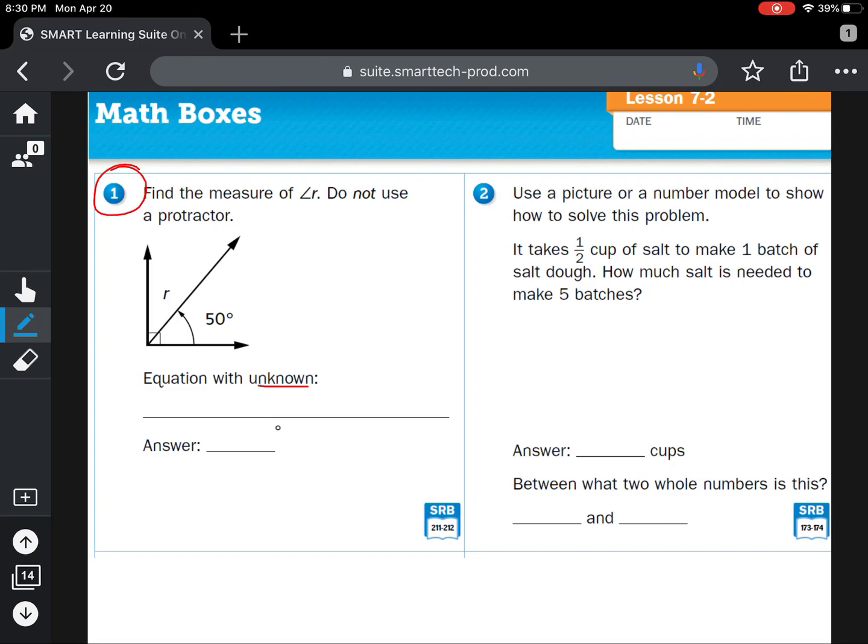This problem seems very similar to the problems that we did in part two of this lesson about baking muffins. So let's think about what they're asking us to do. It takes one half cup of salt to make one batch of the salt dough. How much salt is needed to make five batches?